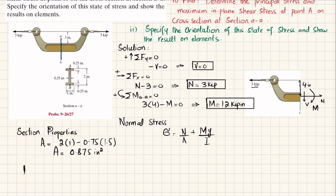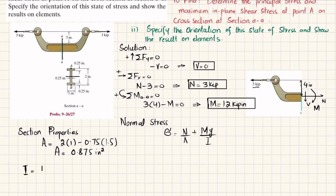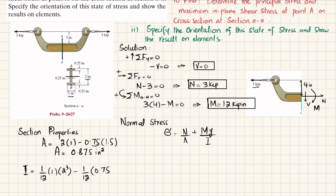Now finding I, the second moment of inertia about the neutral axis. Since the section is symmetrical, I = (1/12)(1)(2³) − (1/12)(0.75)(1.5³), which gives I = 0.45573 inches to the fourth power.